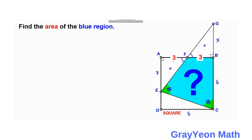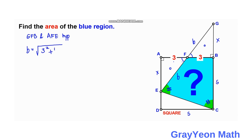Next, we find the hypotenuse of the two congruent triangles GFB and AFE. Let's call this hypotenuse small letter B. B is equal to the square root of the sum of the squares of the two legs: B = √(X² + 9), or equivalently B² = X² + 9.